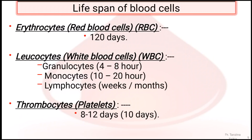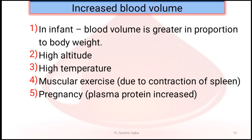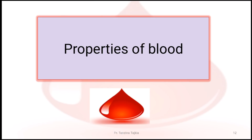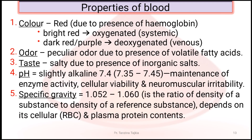Thrombocytes have a lifespan of 8 to 12 days. Conditions that increase blood volume include infancy, high altitude, high temperature, muscular exercise, and pregnancy. Decreased blood volume occurs in cases of hemorrhage, anemia, burns, and acute exposure to cold.